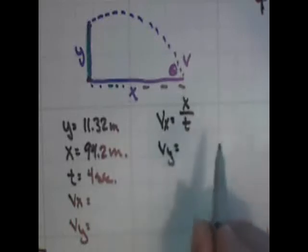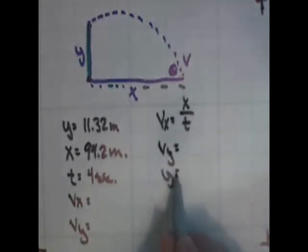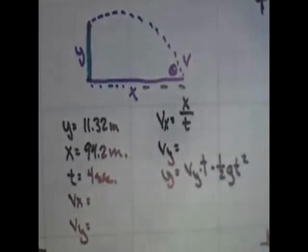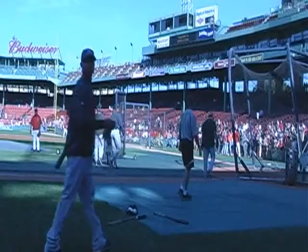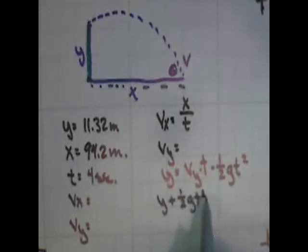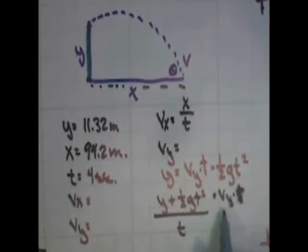Velocity in the y-axis is a little trickier. We know that distance in the y-axis equals the initial velocity in the y-axis times the time minus one-half g t squared. This is the distance traveled for an object under the influence of acceleration, in this case gravity. So to solve for vy, we need to get it by itself. Let's add one-half g t squared to both sides. y plus one-half g t squared equals vy times t. If you divide both sides by t, that gives you vy. Go ahead and try that yourself.